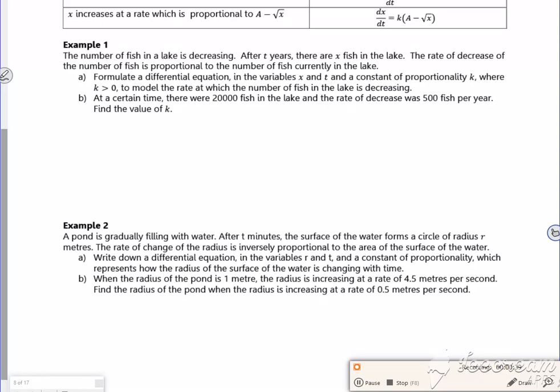It says the number of fish in a lake are decreasing. After t years there are x fish in the lake. The rate of decrease of the fish is proportional to the number of fish currently in the lake.